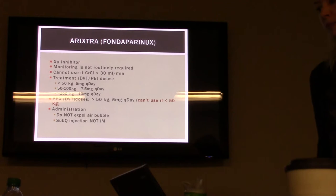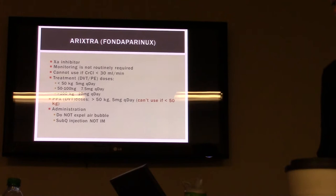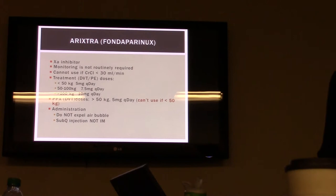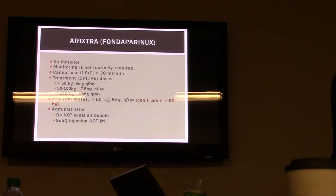Arixtra is a factor Xa inhibitor. You don't monitor it, and you have to be aware of your renal function. It's used for treatment of DVT and PE and prophylaxis of DVT. For prophylaxis, you can't use it if the patient weighs less than 50 kilograms. It's an injection similar to Lovenox — you have the air bubble, and you can only do a sub-Q injection, not IM.